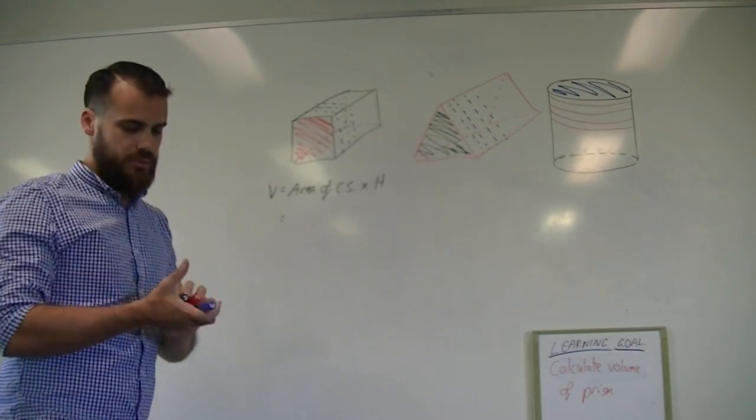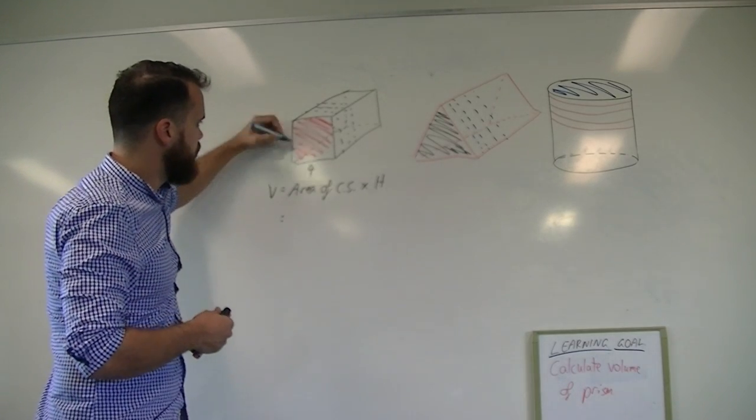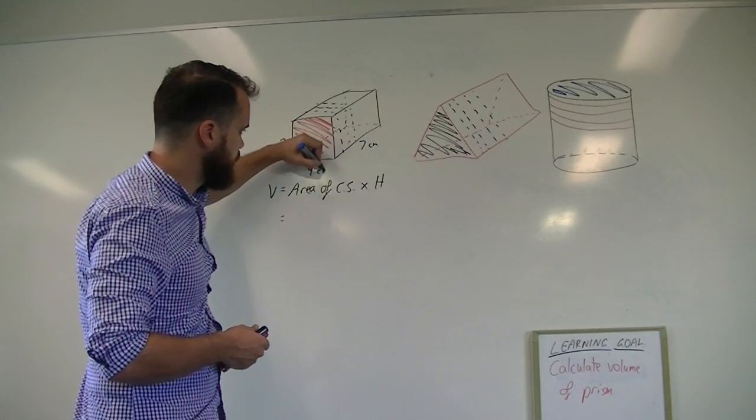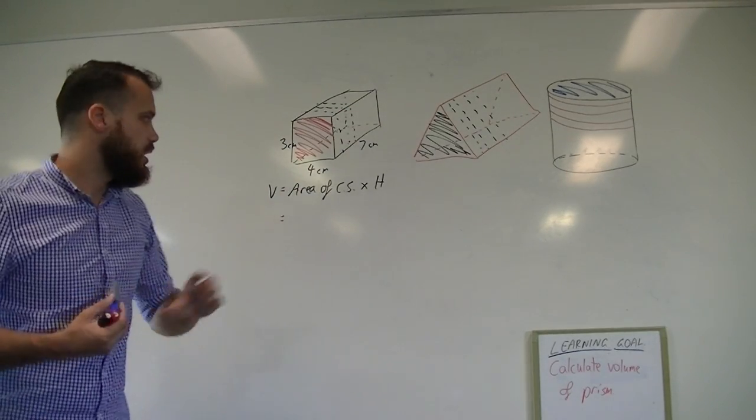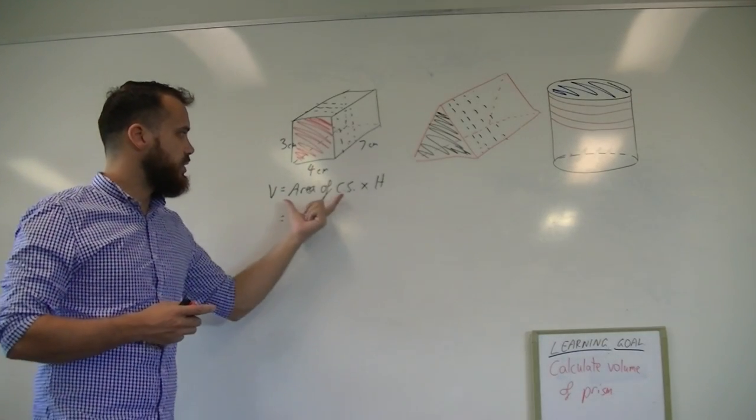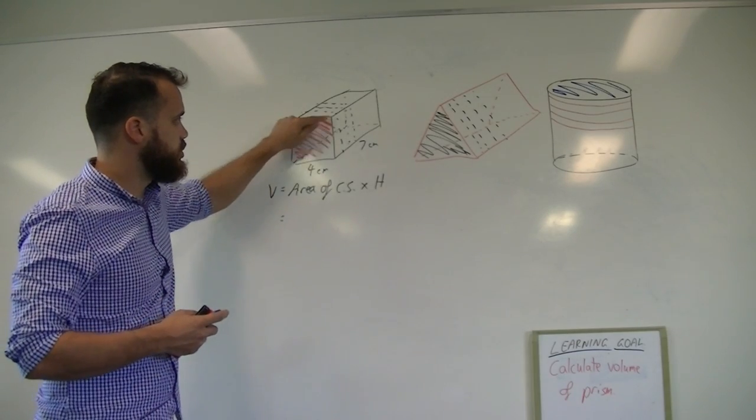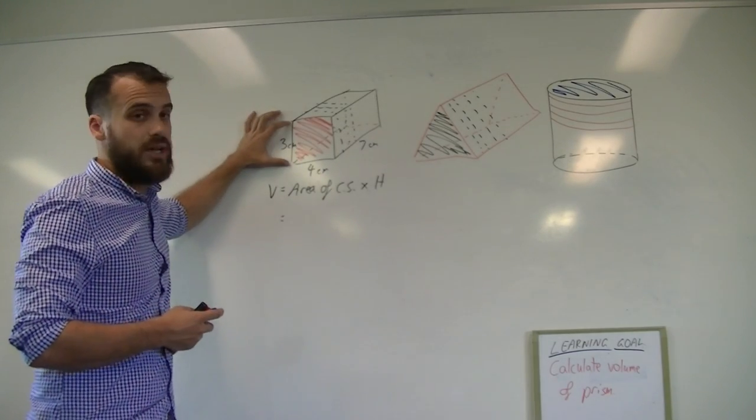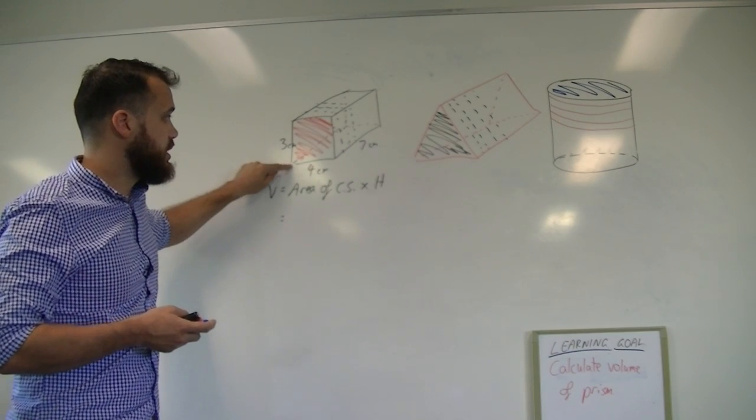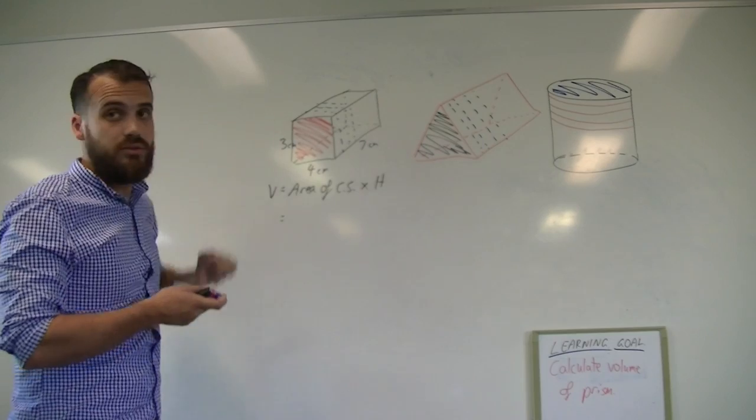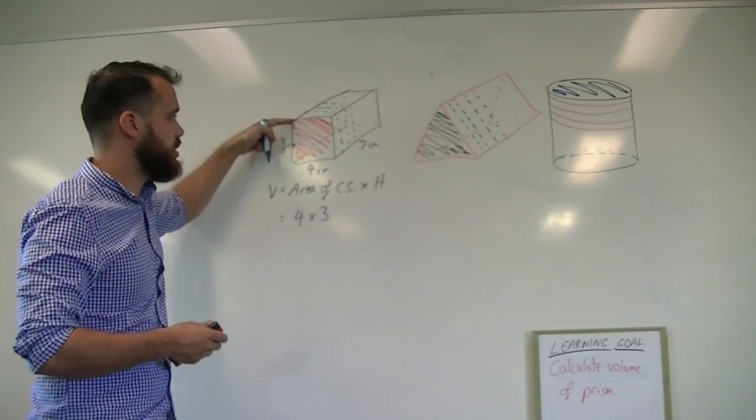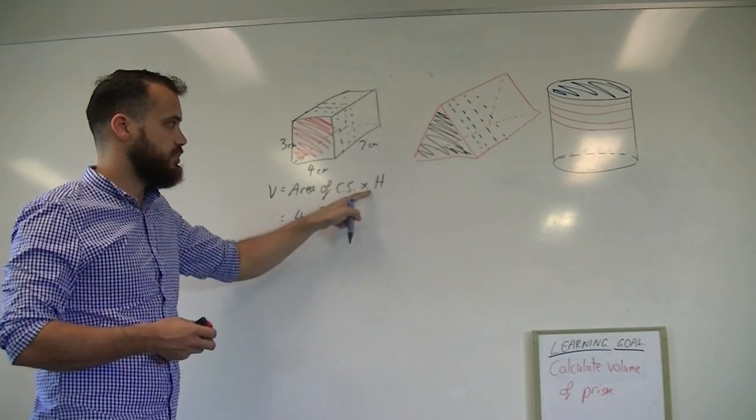Now, if we just put some numbers in here, let's say four by three by seven. Let's assume they're all centimeters. We can calculate the volume of this fairly straightforward. Now, the area of the cross section is the area of this shape. That's a rectangle, and you know how to find the area of the rectangle. It's length times width. So in this case, it's four times three. So the area of the cross section for this shape is going to be four times three.